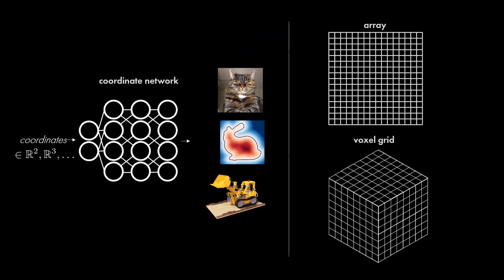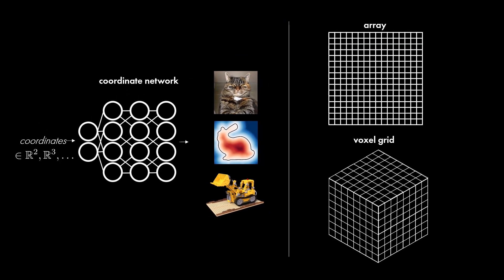Usually, coordinate networks can represent a signal using far fewer parameters than conventional representations, such as arrays or voxel grids, which require fine discretization.